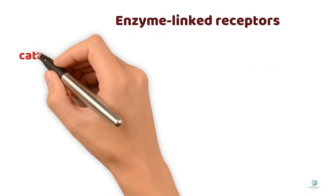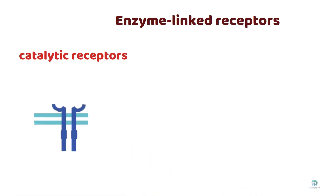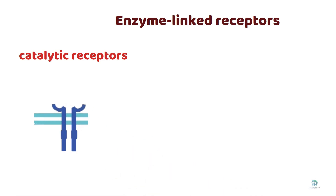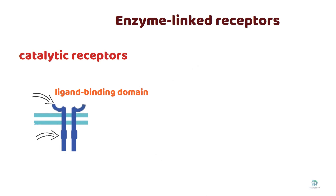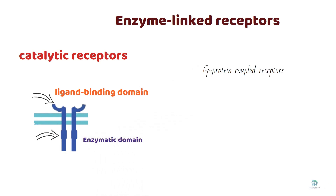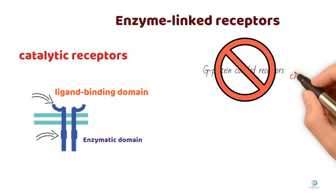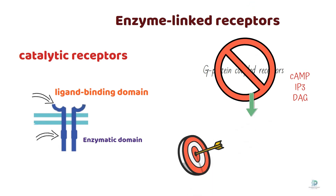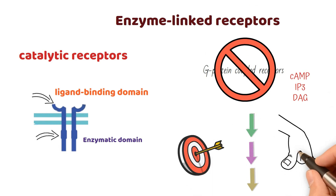Enzyme-linked receptors, also known as catalytic receptors, are transmembrane proteins with an extracellular ligand-binding domain and an intracellular enzymatic domain. Unlike G-protein-coupled receptors, which rely on secondary messengers, enzyme-linked receptors directly initiate a cascade of intracellular signaling upon activation.